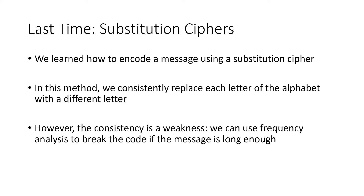Last time we talked about substitution ciphers. A cipher is just a systematic way to encode and decode messages. In substitution ciphers, we consistently replaced every letter of the alphabet with a different letter — for example, every E in the message would get replaced with a J, consistently throughout the entire message.